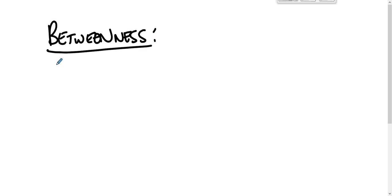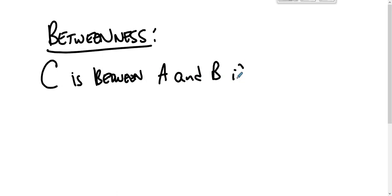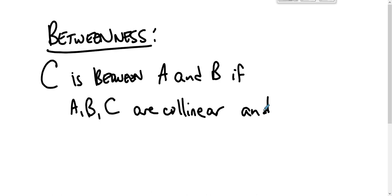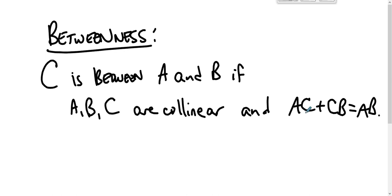We get to talk about betweenness. We say that C is between A and B if A, B, and C are collinear — meaning they lie on the same line.